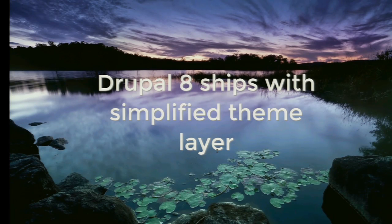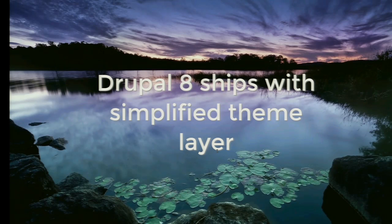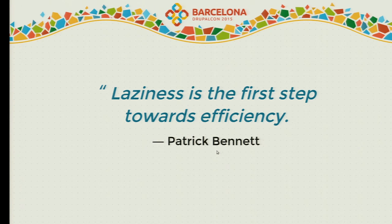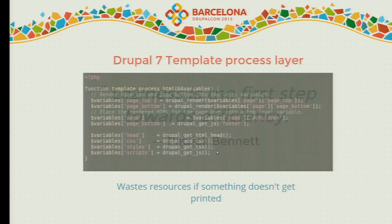What we try to achieve in Drupal 8 is a simplified Theme Layer. When we moved from Drupal 6 to Drupal 7, we actually made the Theme Layer a lot more complicated. This time we figured out we have to make it simpler, because when the Theme Layer is too complex, it makes people build things differently and creates more possibilities to misuse the APIs. Another important thing is that we want to be lazy — laziness is the first step towards efficiency.